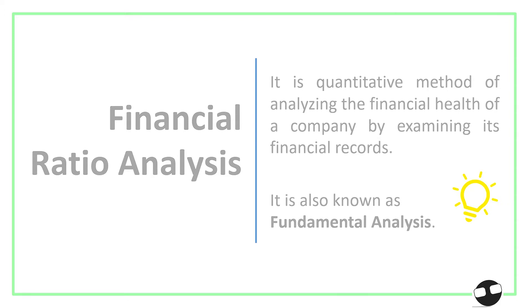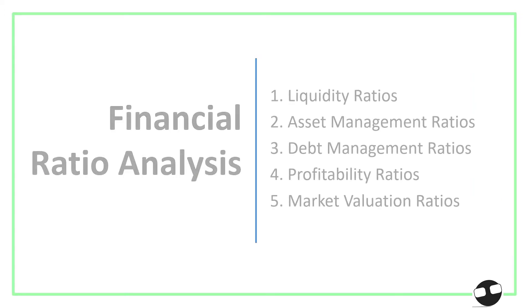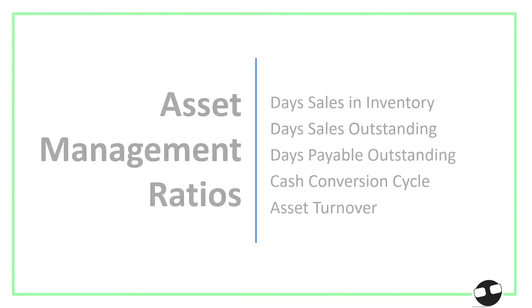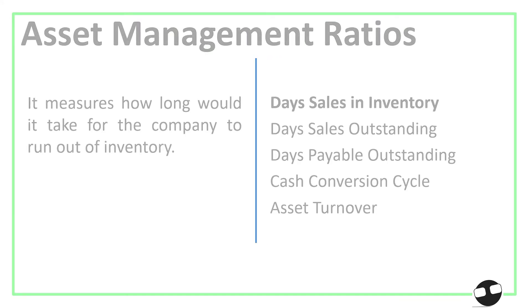In particular, we're going to focus on asset management ratios. We have five: Days Sales in Inventory, Days Sales Outstanding, Days Payable Outstanding, the Cash Conversion Cycle, and Asset Turnover.